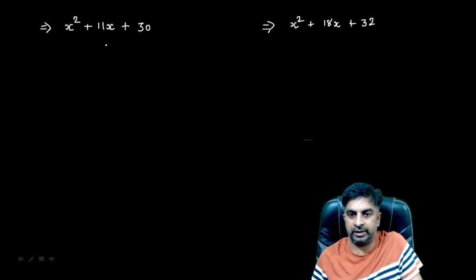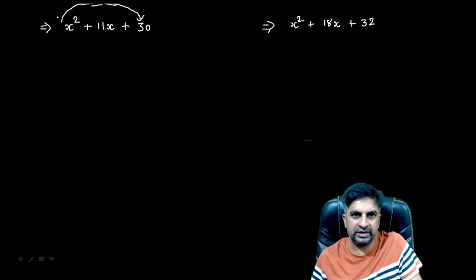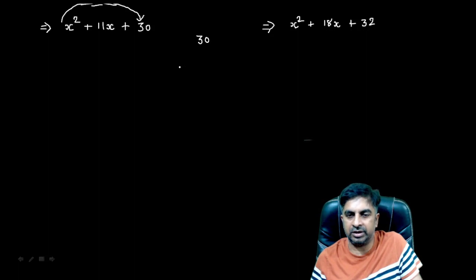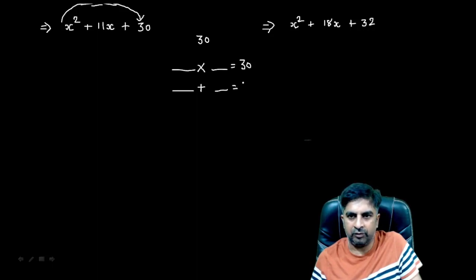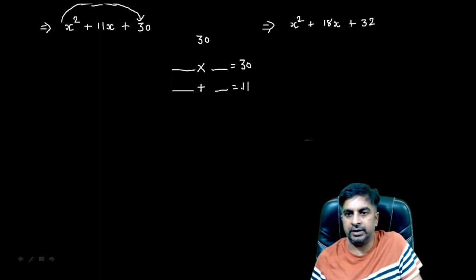So let me tell you how to do splitting the middle term of a quadratic polynomial. First, you need to multiply the coefficient of x² — meaning the first term — and the last term. The coefficient of x² is 1, so 1 multiplied by 30 gives you 30. Now we need to find the factors of 30 such that their product is 30 and their addition equals the middle term, which is positive 11.